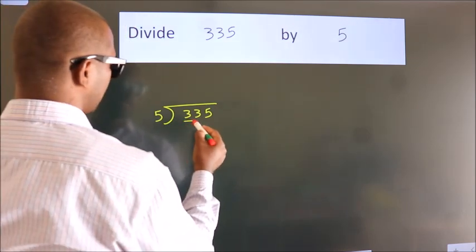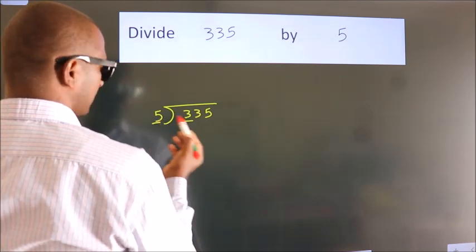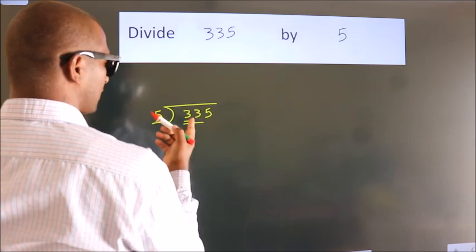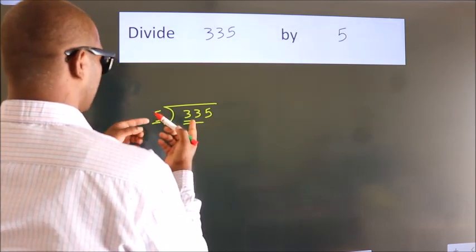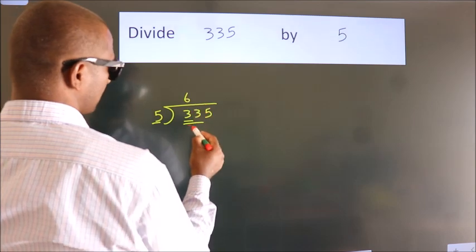Here we have 3. Here 5. 3 is smaller than 5, so we should take 2 numbers: 33. A number close to 33 in the 5 table is 5 times 6, which is 30.